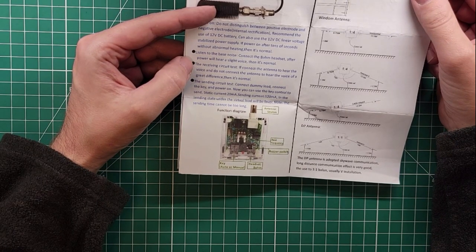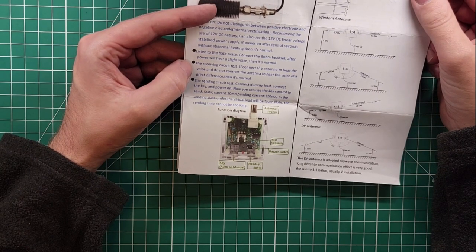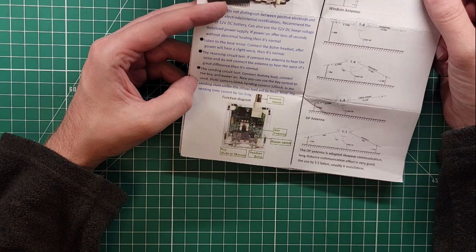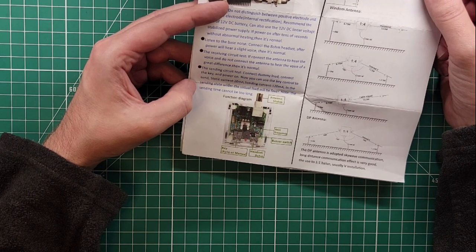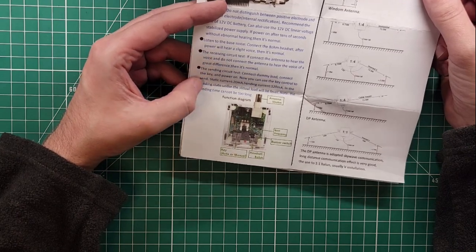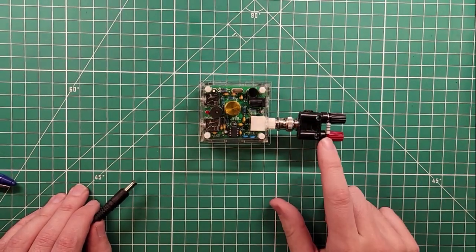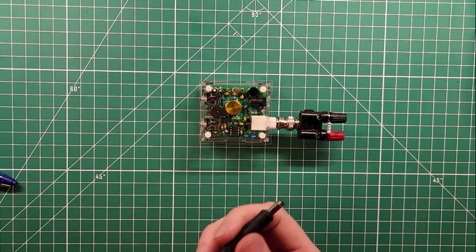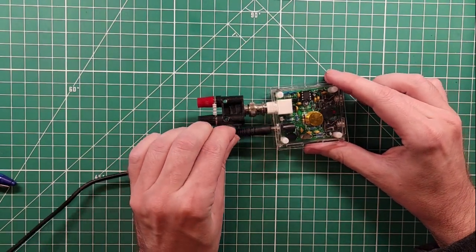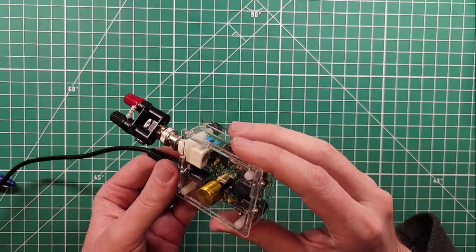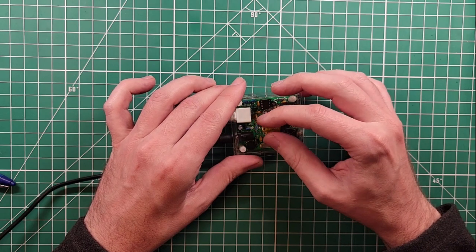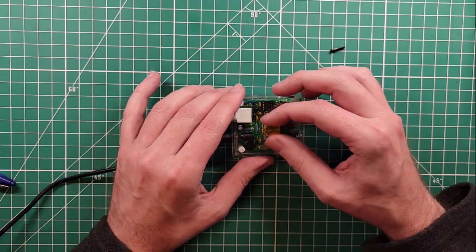If connect the antenna to hear the voice and do not connect the antenna to hear the voice of a great difference then it's normal. Connect me load. Connect the key and power on. Now you can use the key to control. Now you can use the key control to send. Static current in the sending state under the virtual load will be fever. Note the sending time cannot be too long. So that's probably so that you don't overheat things. Okay so I did the dummy load with the banana plug adapter, the binding post adapter and I've got my power cable here. Let's turn this thing around so it connects. And here we go. First time first try. The LED came on a little bit. And then went right back off. It blinks on and off. Okay. I'm not hearing anything. Let's get a key.